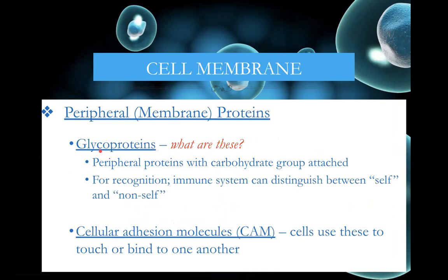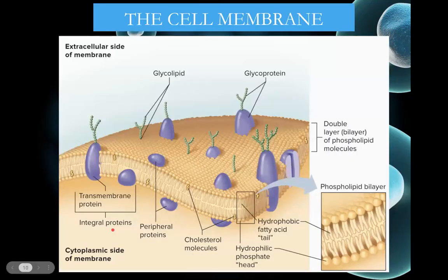Glycoproteins — glyco referring to carbohydrate, protein being obvious — are part protein, part carbohydrate, and they help to identify the cell. This is especially important for blood types, which we'll talk about later in the year. Cellular adhesion molecules, or CAMs, are in the membrane and allow one cell to touch or bind to another cell. The membrane is primarily phospholipids, but it is studded by proteins and steroids.